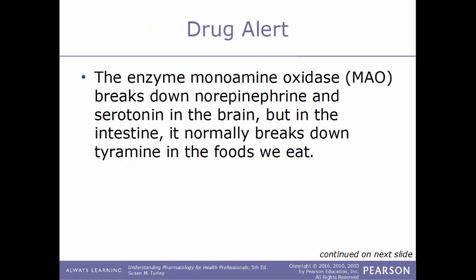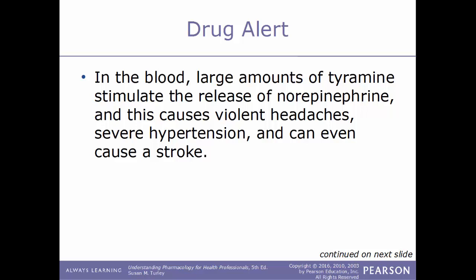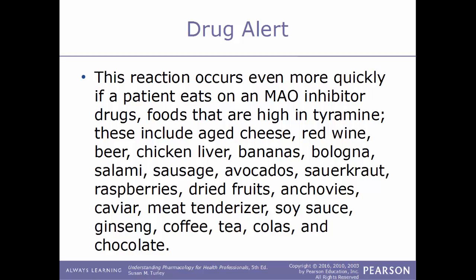The enzyme monoamine oxidase breaks down norepinephrine and serotonin in the brain, but in the intestines it normally breaks down tyramine found in food. When a patient takes an MAO inhibitor, the enzyme is blocked and tyramine is not broken down but instead absorbed into the blood. Large amounts of tyramine then stimulate the release of norepinephrine, causing violent headaches, severe hypertension, and even stroke. Foods already high in tyramine that must be avoided include aged cheese, red wine, beer, chicken liver, bananas, bologna, salami, sausage, avocados, sauerkraut, raspberries, dried fruits, anchovies, caviar, meat tenderizer, soy sauce, ginseng, coffee, tea, colas, and chocolate.